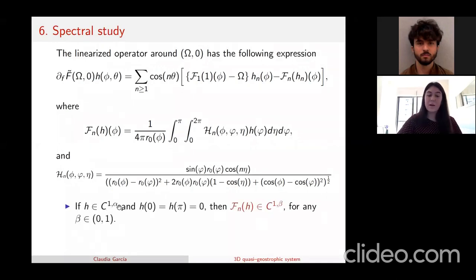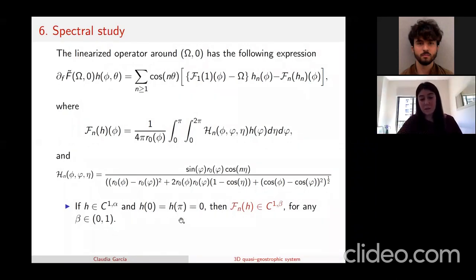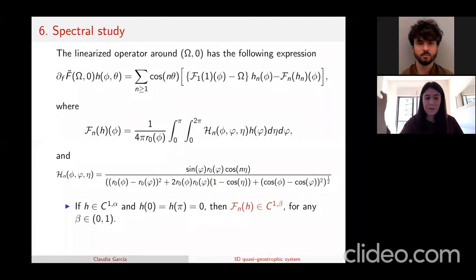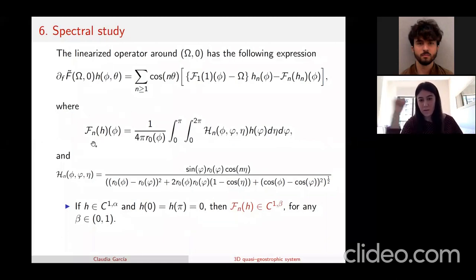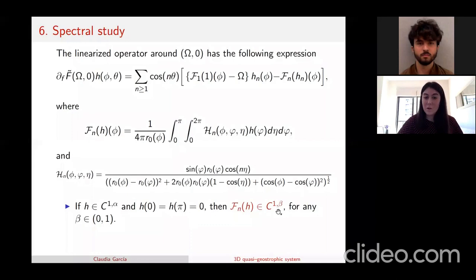In particular, for beta larger than alpha but less than one, the non-local operator from C^{1,alpha} to C^{1,alpha} is a smoothing (and hence compact) operator. Analyzing the local part, if the function multiplying h_n is non-vanishing — which corresponds to omega in (minus infinity, kappa), where kappa is the infimum of that function — then the local part is an isomorphism. Combining, the linearized operator is an isomorphism plus a compact operator, hence a Fredholm operator of index zero.